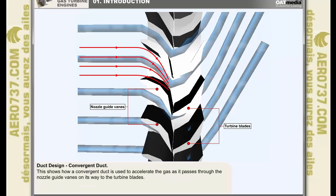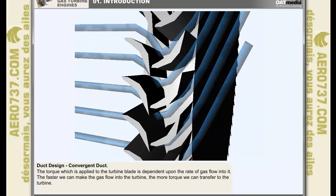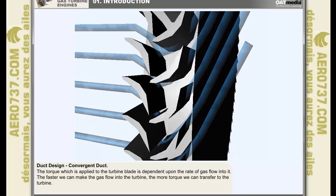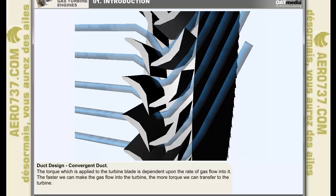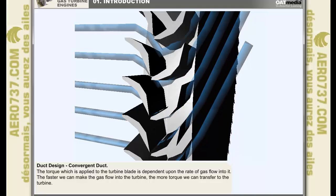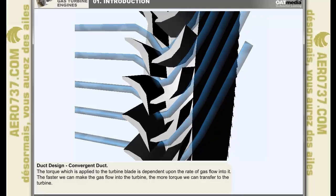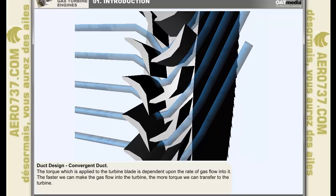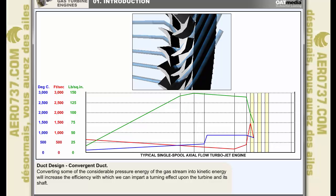This example, which we have already experienced, shows how a convergent duct is used to accelerate the gas as it passes through the nozzle guide vanes on its way to the turbine blades. The torque which is applied to the turbine blade is dependent, amongst other things, upon the rate of gas flow into it. It follows then that the faster we can make the gas flow into the turbine, the more torque we can transfer to the turbine. Logically therefore, if we convert some of the considerable pressure energy of the gas stream into kinetic energy, it will be more efficient in imparting a turning effect upon the turbine and its shaft.